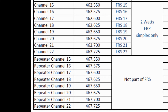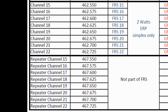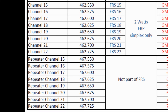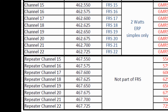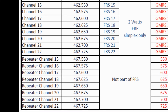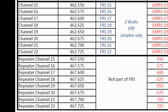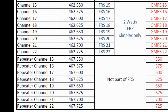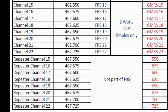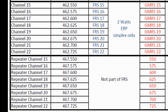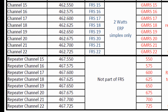The top frequencies, the ones starting with 462, are used for simplex in both GMRS and FRS, and they're also used for repeater output on GMRS. The channels starting with 467 are used for repeater inputs and can also be used for fixed station communication.